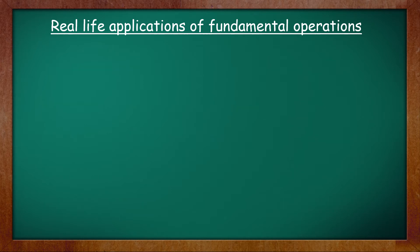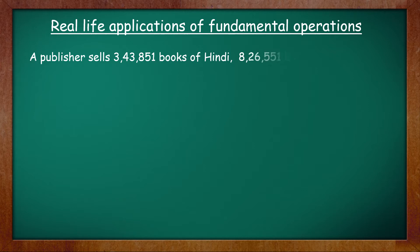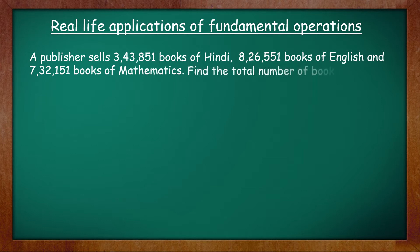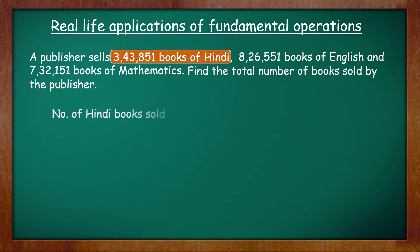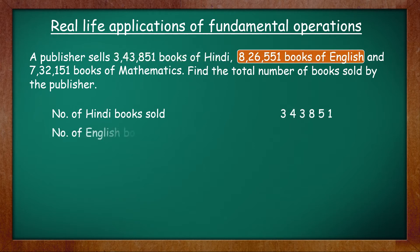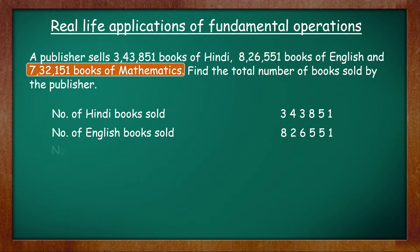Let's begin with the first question. A publisher sells 3,43,851 books of Hindi, 8,26,551 books of English, and 7,32,151 books of mathematics. Find the total number of books sold by the publisher. We have to find the total number of books sold, which clearly means that we have to add. So begin with the first statement: number of Hindi books sold is 3,43,851, number of English books sold is 8,26,551, and number of mathematics books sold is 7,32,151.